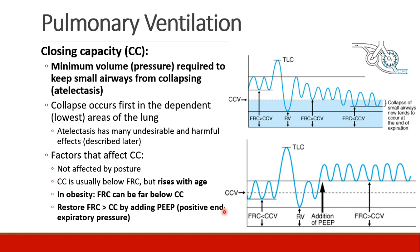We also need to understand the concept of closing capacity. The closing capacity is the minimum volume — really the minimum pressure — required to keep your small airways from collapsing, which is atelectasis. Collapse occurs first in the dependent or lowest areas of the lung, gravitationally. Atelectasis has many undesirable and harmful effects, which we'll describe later in our discussion of pulmonary physiology.